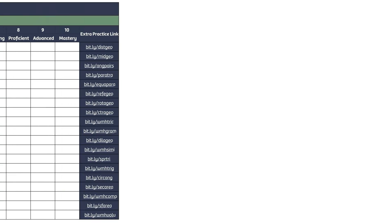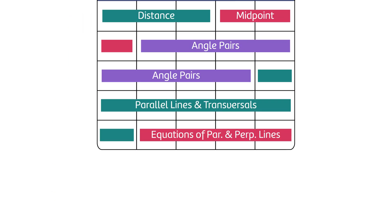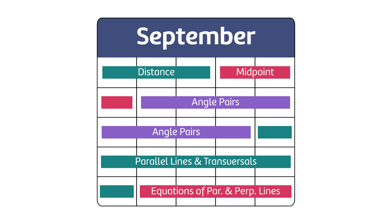Implementing standards-based grading actually starts before the school year begins. For me, the process began by making a checklist of concepts that would be assessed for geometry, the course I was teaching that year. The goal is to find the 20 or so most important concepts in the course. We will spend the entire year focusing on this list, and our assessments will be based on it. From there, I made a rough draft pacing guide based on my school calendar, and then I got started.